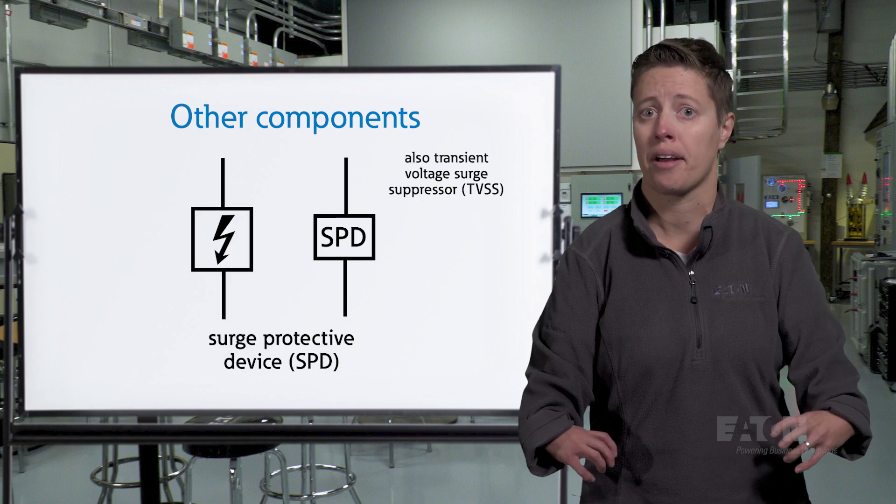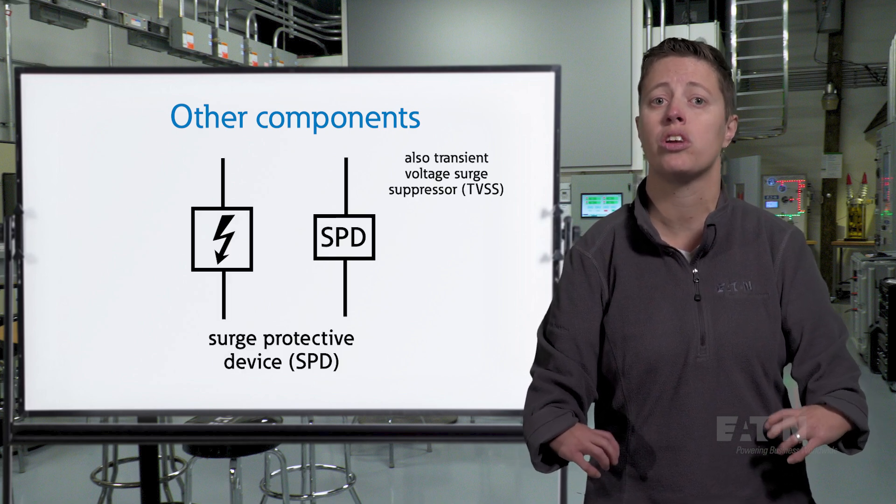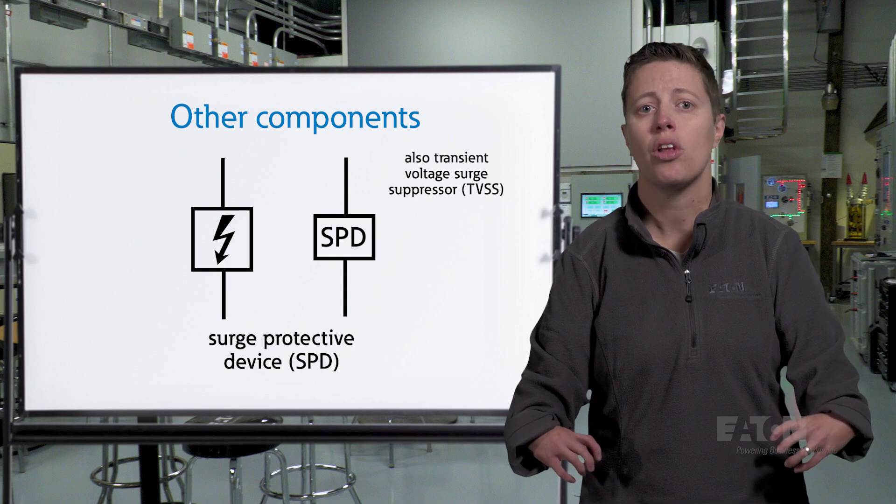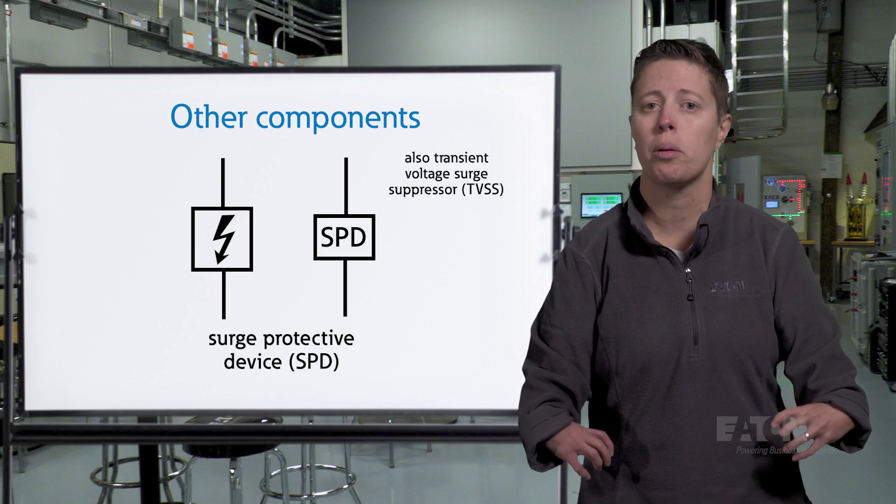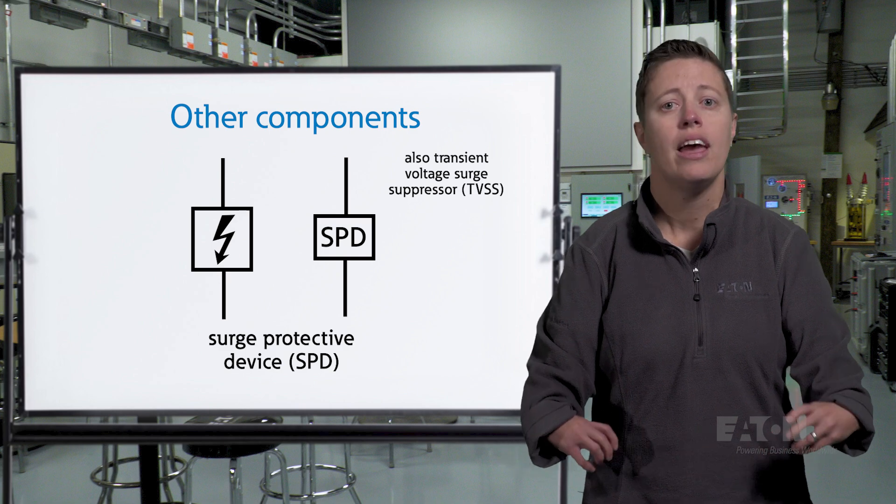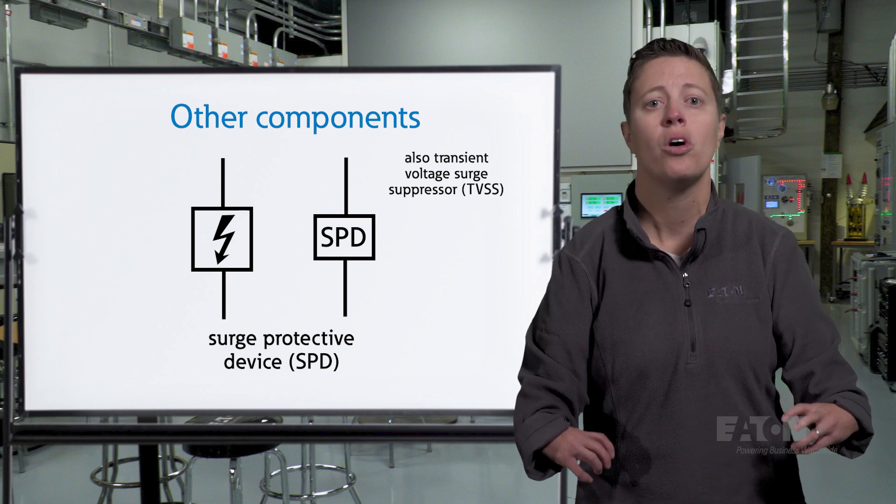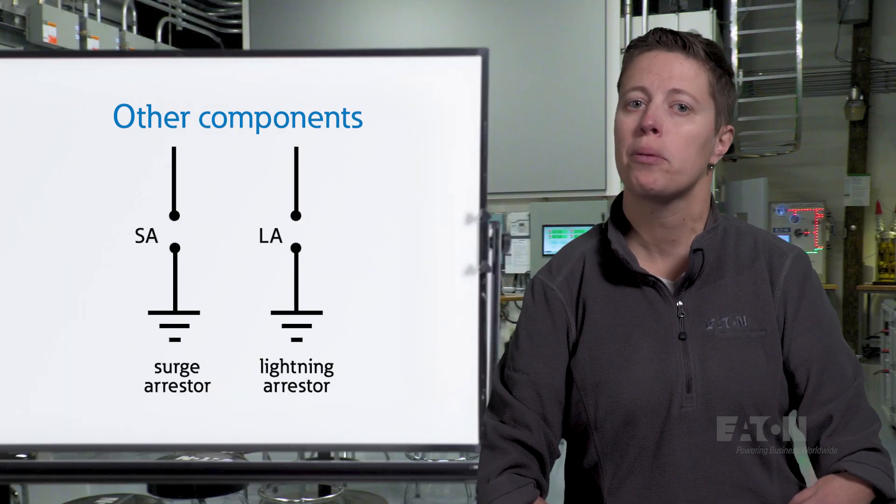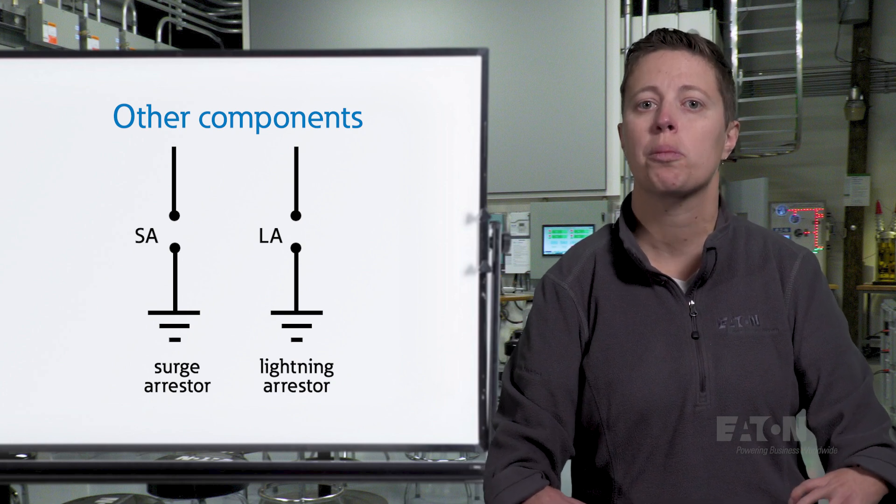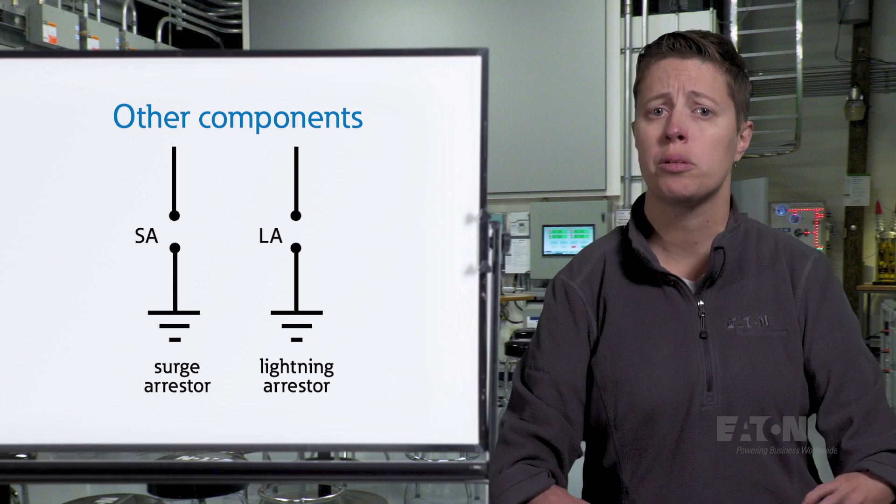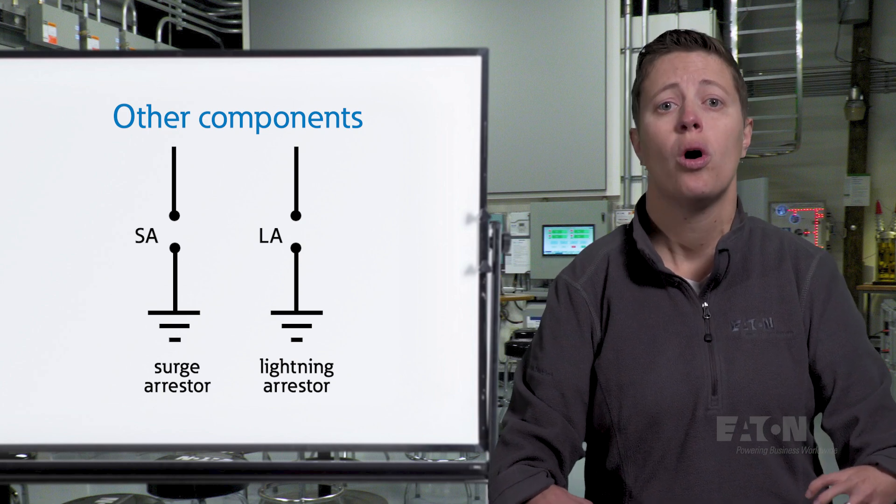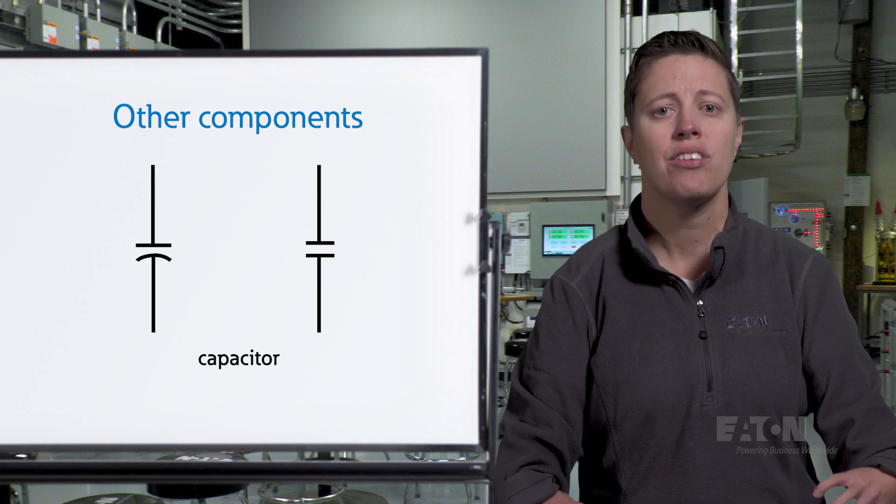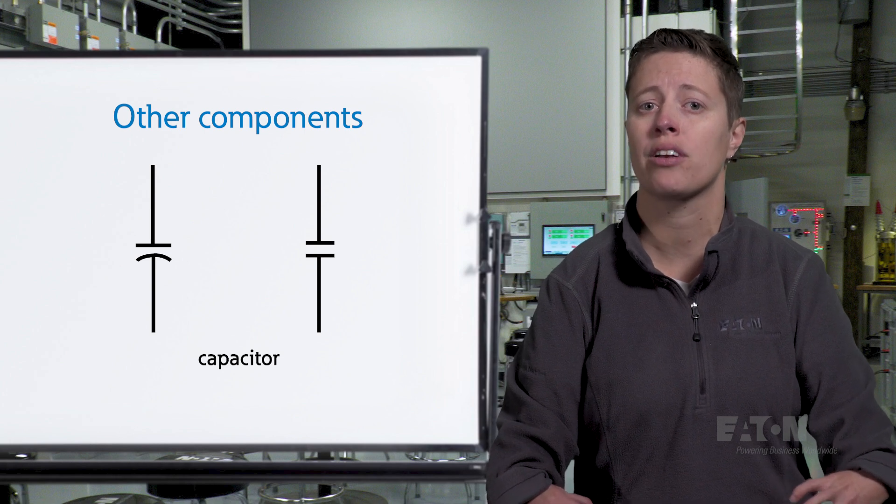A surge protective device, also called a transient voltage surge suppressor, abbreviated SPD or TVSS, represents a low voltage electrical device used to protect equipment from voltage spikes. It is usually depicted as a rectangle with a lightning bolt or the letters SPD inside. A surge arrestor or lightning arrestor symbol represents a medium voltage electrical device used to protect equipment from voltage spikes. It is usually depicted as a lightning bolt symbol or a series of parallel lines with the letters SA or LA.